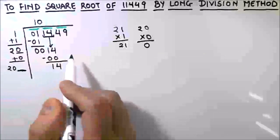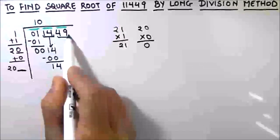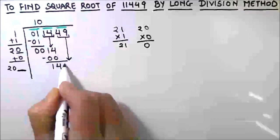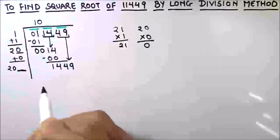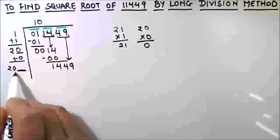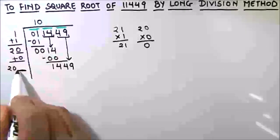The next step is to bring down the next group, which is four nine. So one four four nine is our next dividend. Now we need to add such a number in front of two zero to get the result as 1449 or less than 1449.